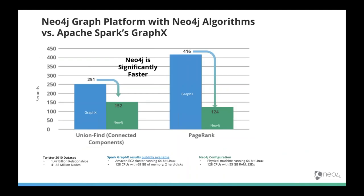We did a benchmark comparison against a Twitter 2010 dataset, where the baseline was Spark GraphX, running on a 55 GB RAM machine with 128 CPUs. Our library is significantly faster for both community detection and centrality algorithms. There's also a researcher called Frank McSherry who wrote a lot about running graph analytics on a single machine rather than a massive cluster — we got quite a bit of inspiration from his blog posts. You can do reasonable work just on your laptop; you don't necessarily need a massive machine to get started.